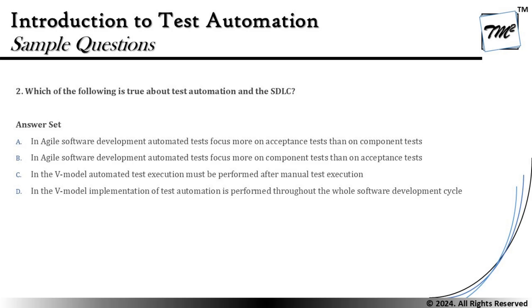Option B says: in agile software development, automated tests focus more on component test than on acceptance test. This is exactly the vice versa of Option A, and it makes a lot of sense. This looks like the right answer, but always cross-check even if you think you have found the correct answer at the beginning.